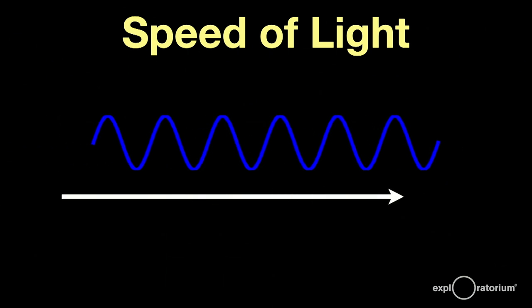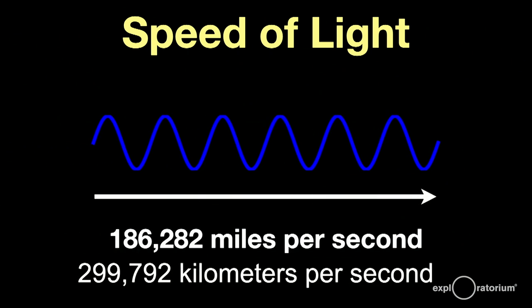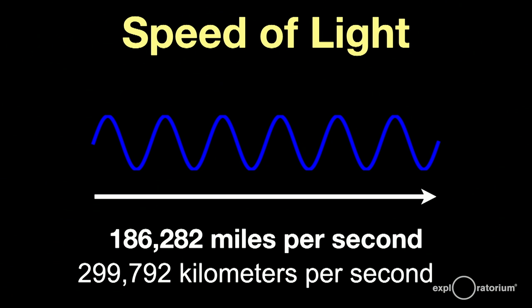The first thing we can talk about is the speed of light. Light is an electromagnetic wave — a wave of changing electric and magnetic fields that travels through space at nature's speed limit: 186,282 miles per second, or about 300,000 kilometers per second. Nothing in nature moves faster.